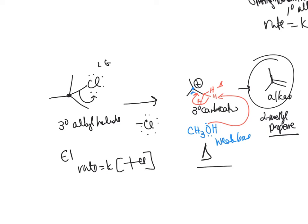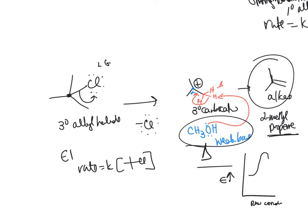The reaction energy diagram for E1 shows: starting material goes over a high activation energy barrier to form the carbocation, then a smaller barrier to form the product. The rate-determining step is the first step — forming the carbocation — which is why E1 rate depends only on the alkyl halide concentration.